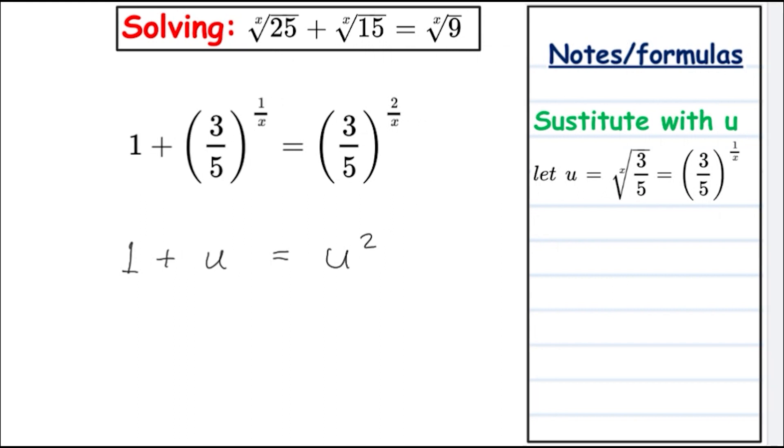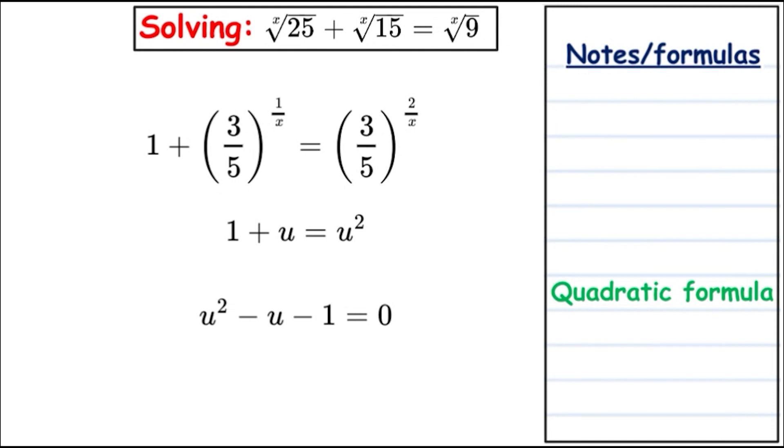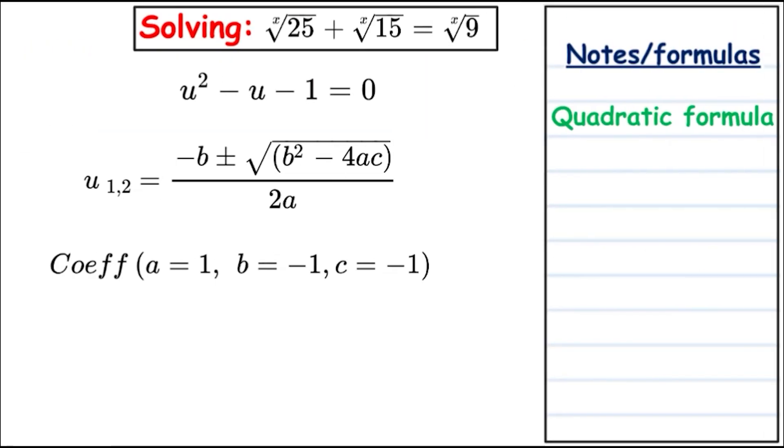It's very simple now in this format - it's quadratic form. We're going to apply the quadratic formula and assign the coefficients a, b, and c. We have a is equal to 1, b is equal to negative 1, and c is equal to negative 1.